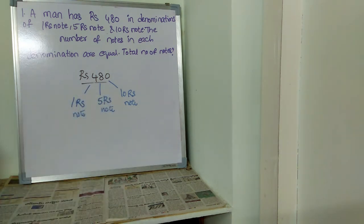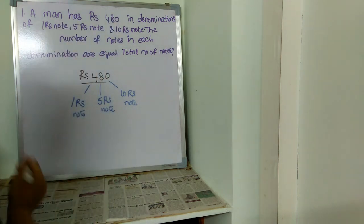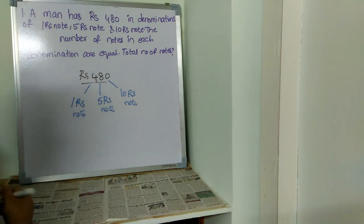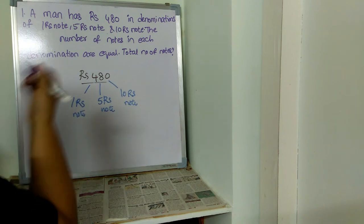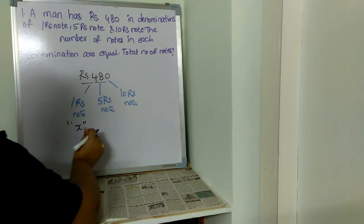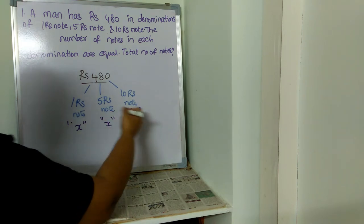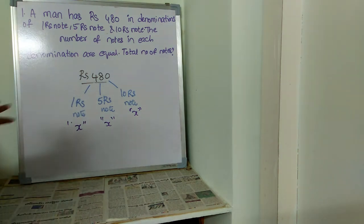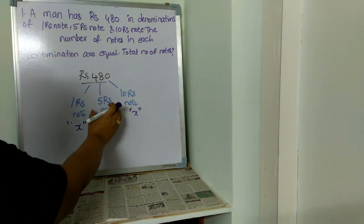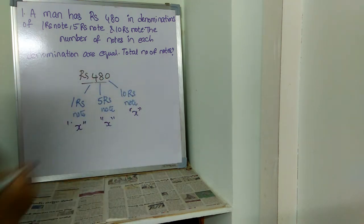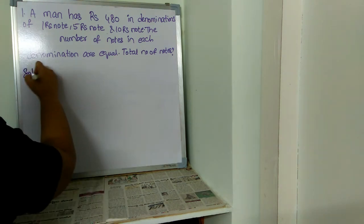The main thing the question says is that he has an equal number of notes. He has some number of one rupee notes, the same number of five rupee notes, and the same number of ten rupee notes — he has the same number of all the notes. All notes individually are the same count. Let us call that number x.